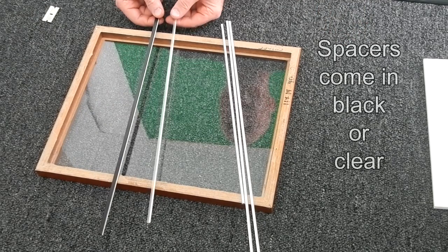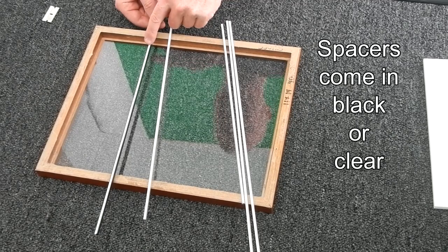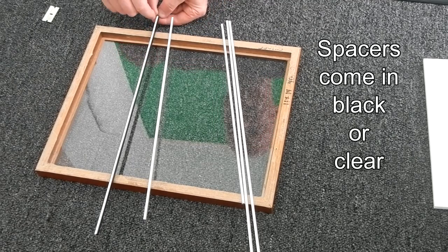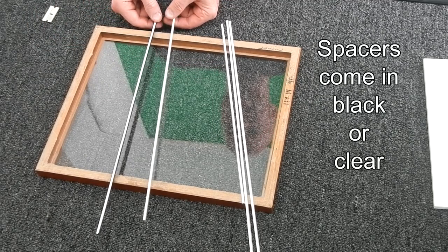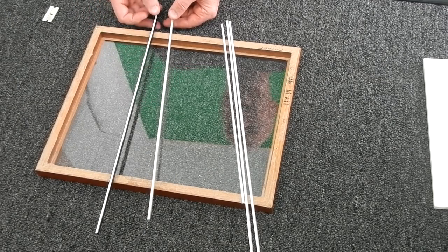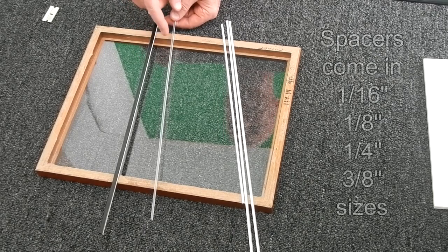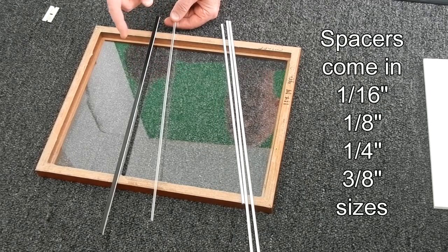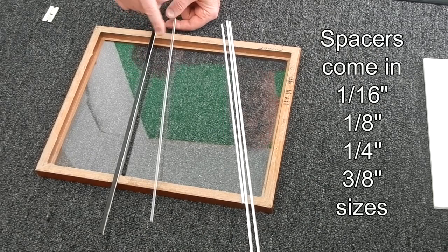It comes in black and it comes in clear. It always has this peeling sticker that you peel off of either side, so you just decide which is going to look better with your image. It comes in three different sizes: we sell it in 1/16th, 1/8th, and 1/4 inch.